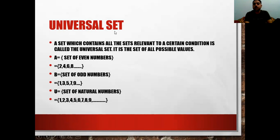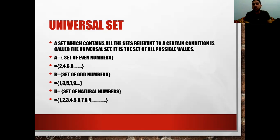First, the universal set: a set which contains all sets relevant to a certain condition is called the universal set — it is a set of all possible values. For example, if set A is the set of even numbers {2, 4, 6, 8} and set B is the set of odd numbers {1, 3, 5, 7, 9}, then the universal set is the set of all natural numbers, which includes both A and B.